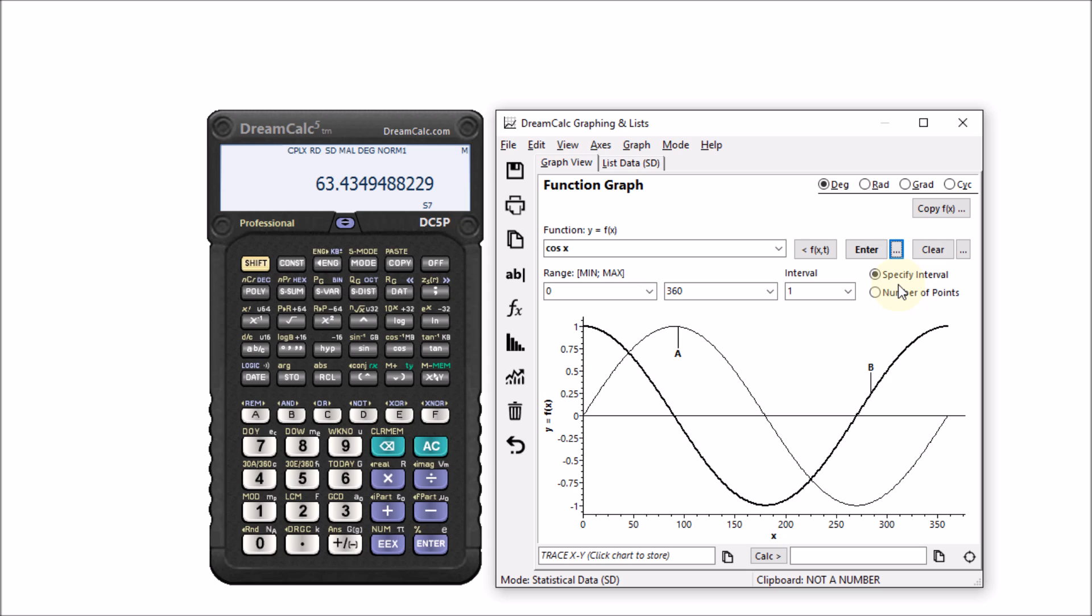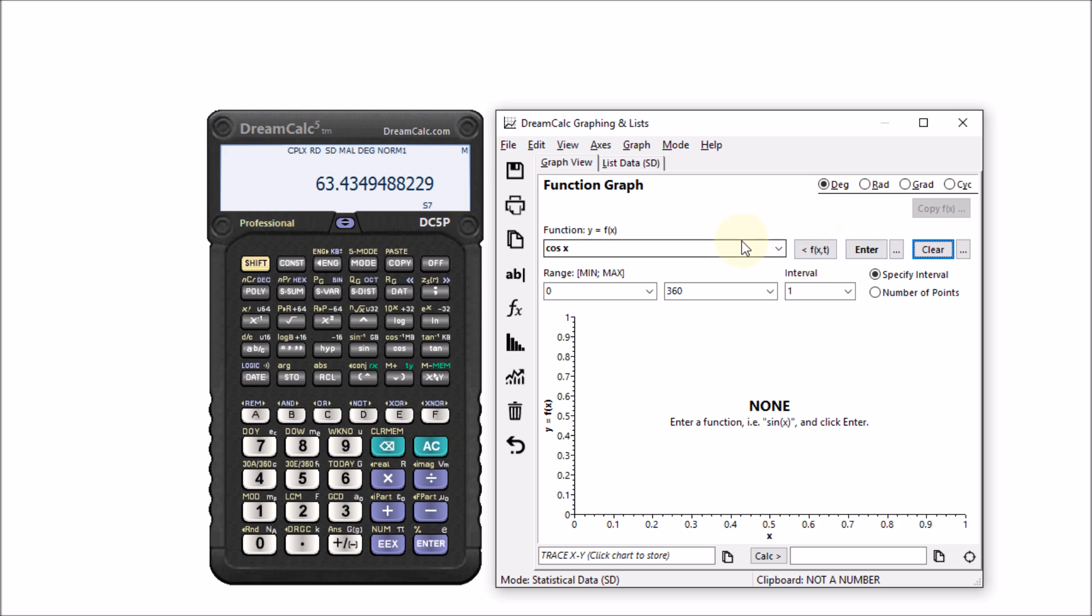Here we will plot sine and cosine on the same graph. Now, plot A shows the sine function, and plot B, the cosine function. As we can see, they are identical, except for a 90 degree phase difference between their respective input values.